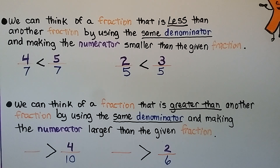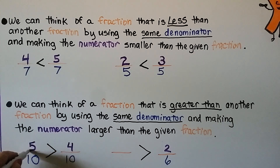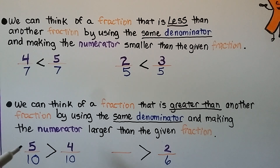We can also think of a fraction greater than another fraction by using the same denominator and making the numerator larger than the given fraction. Here we need a fraction greater than 4 tenths — we use the same denominator, 10, and think of a number greater than 4 for the numerator. 5 is greater than 4. We could put any number greater than 4: 6 tenths, 7 tenths, 8 tenths, 9 tenths, or 10 tenths — because those numerators are all greater than 4.